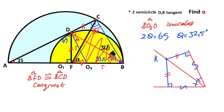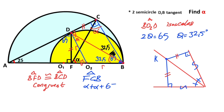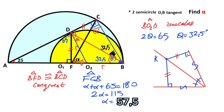Now if you focus on triangle FCB, you know that the sum of the interior angles equals 180 degrees. So alpha plus alpha plus 65 degrees equals 180 degrees, giving 2 alpha equals 115 degrees, so alpha equals 57.5 degrees.